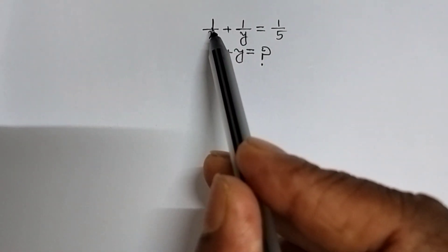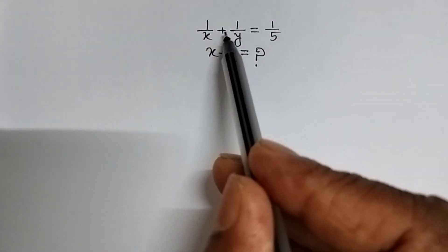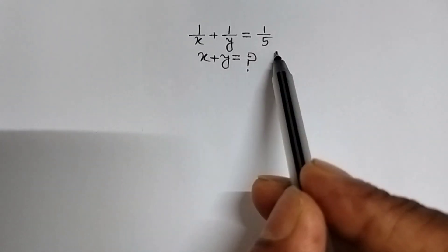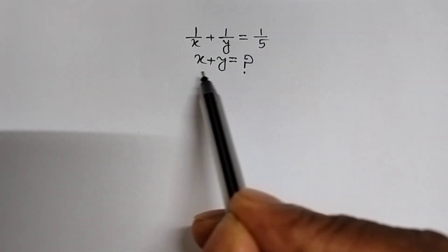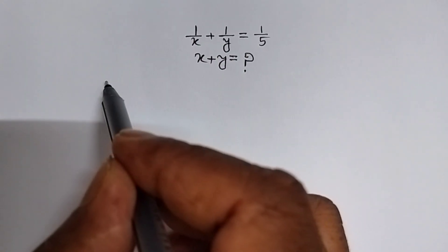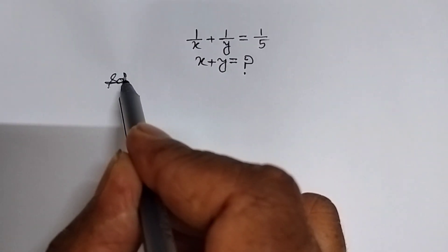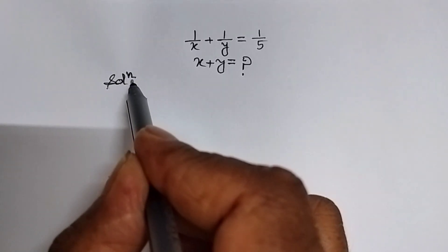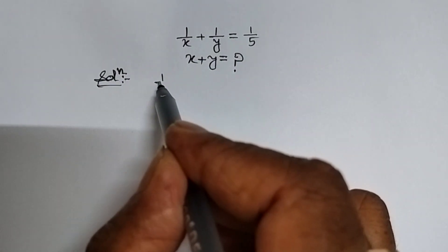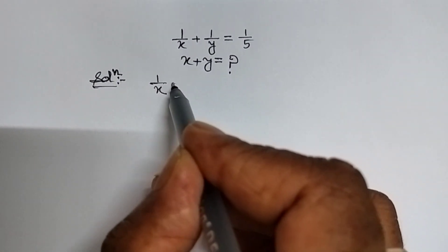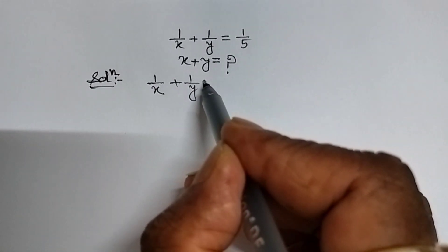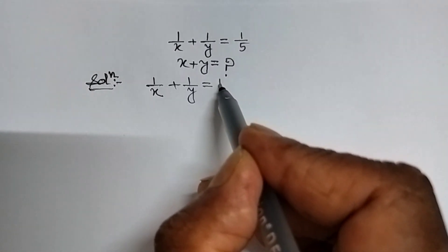Our given question is 1 upon x plus 1 upon y equal to 1 upon 5. We will have to find the value of x plus y. It's very easy. Let's see the solution. First of all, we write the given condition, that is 1 upon x plus 1 upon y equal to 1 upon 5.